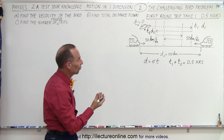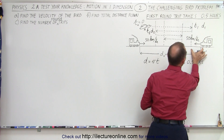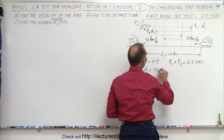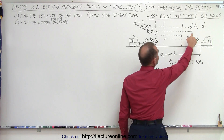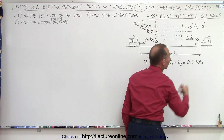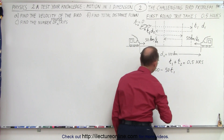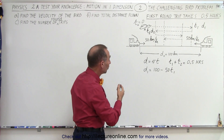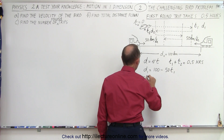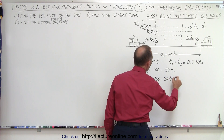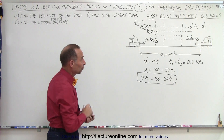How would we describe distance 1? The total distance is 100 kilometers minus the distance the train covered, so D1 equals 100 minus 50 times T1, since the train moves at 50 kilometers per hour. Distance 1 is also the distance the bird traveled, so the velocity of the bird times T1 equals 100 minus 50 T1. That's one equation, but it has two unknowns: the velocity of the bird and T1.